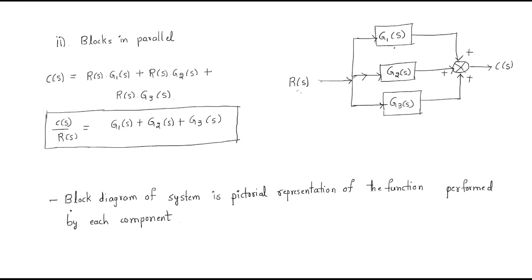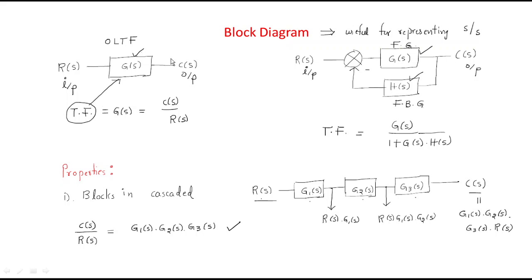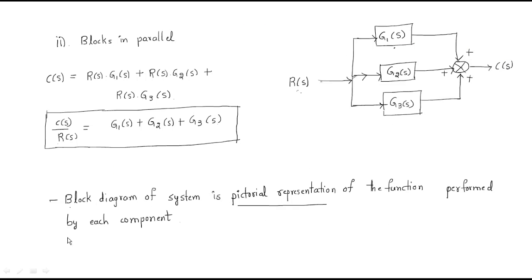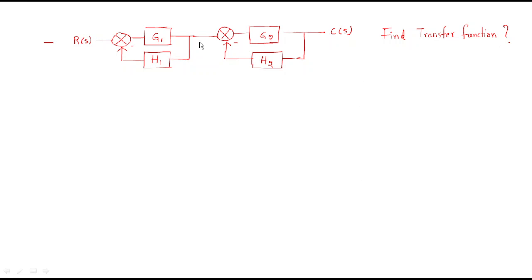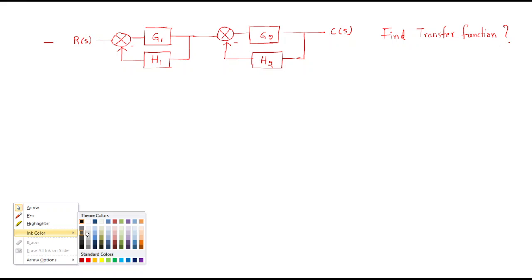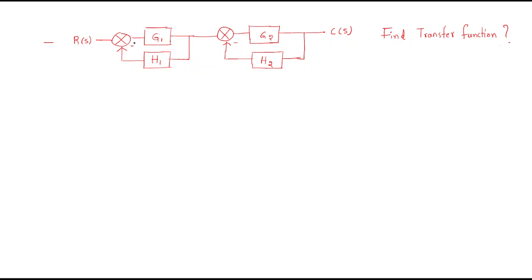One important point: the block diagram of a system is a pictorial representation of the function performed by each component. It shows each and every component, represents gains in blocks, and shows the input as well as the output.